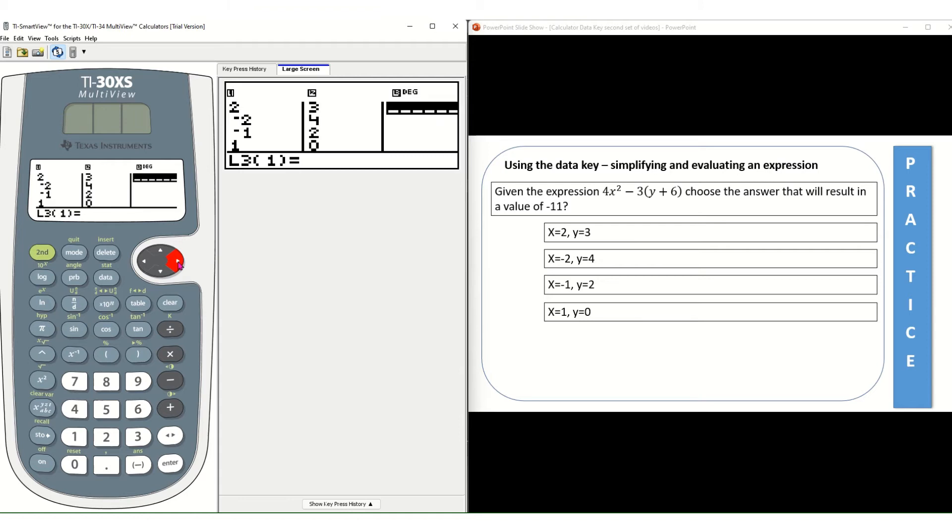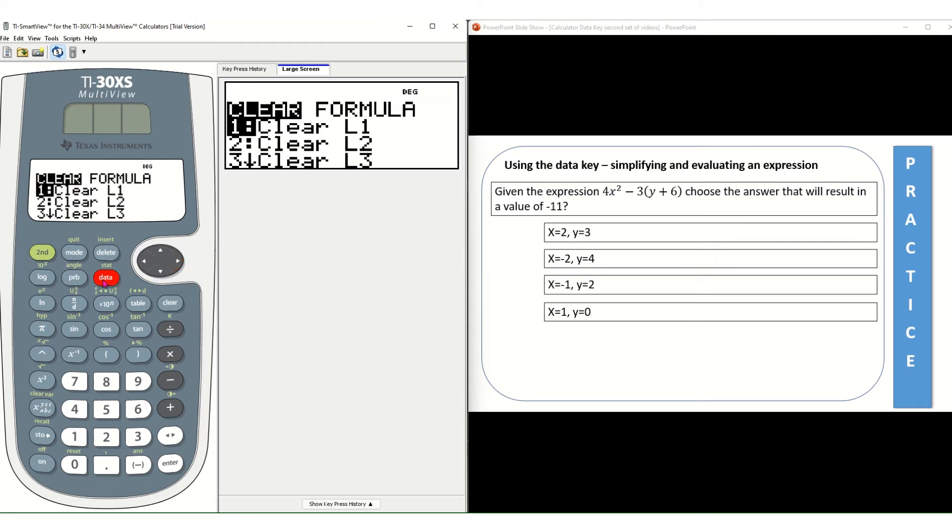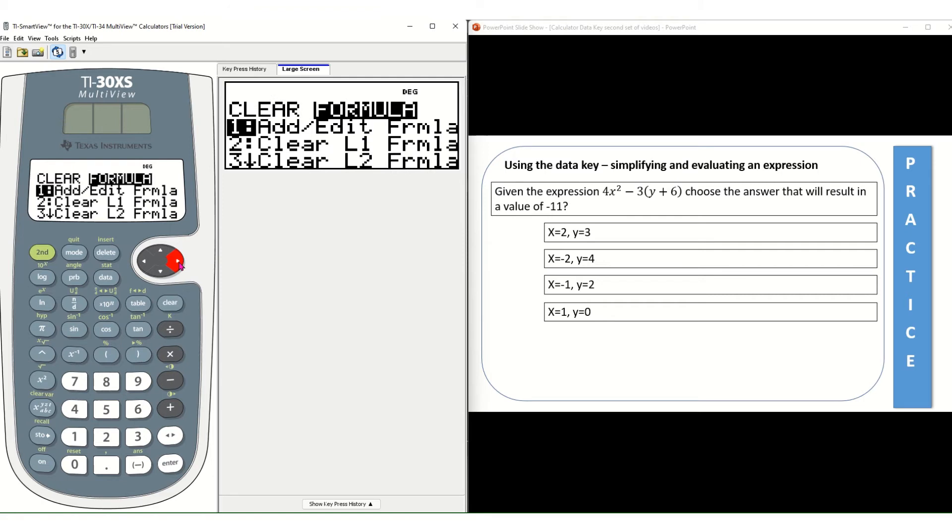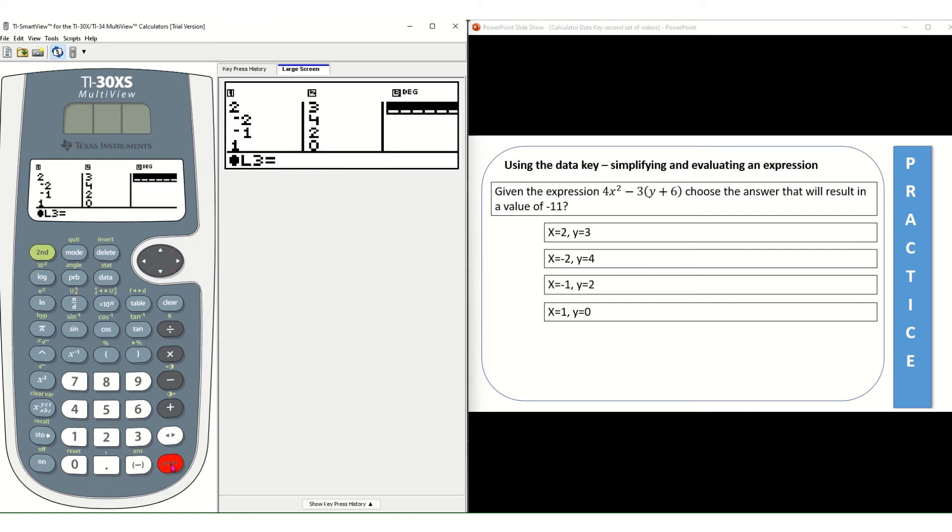So what you need to do now because you're entering a formula is press your data key and then use the right arrow to move over to formula so it's highlighted in black. And that first option we have, add edit formula, is what we want. So we're gonna press the enter key and now notice your cursor is at the bottom flashing because it's ready for you to enter the expression.